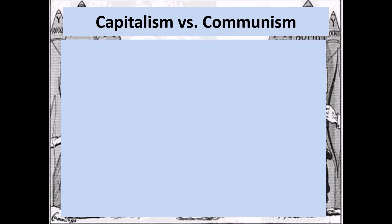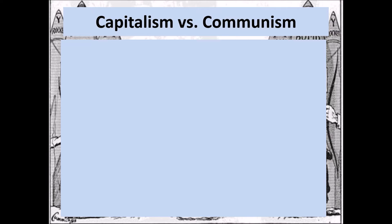We're going to talk about capitalism and communism and the basic fundamental differences between the United States and the USSR, which made it difficult for us to get along. The Soviet economic system of communism called for government ownership of the means of production and centralized decision making.